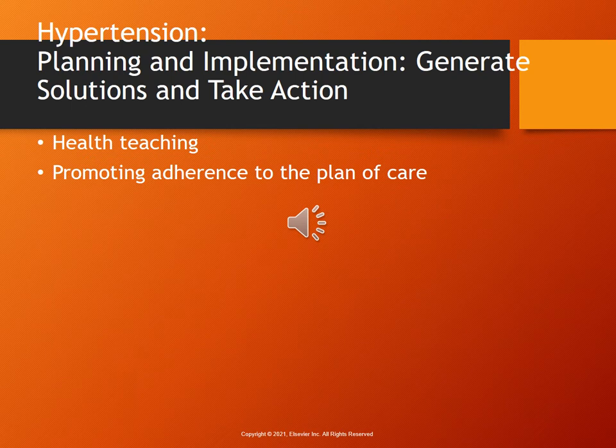Pages 702 to 705 talk about planning and implementation. The client with hypertension is expected to verbalize their individualized plan of care, including lifestyle changes and complementary and integrative health. Pages 703 and 704 cover medical management using drug therapy for hypertension. You have diuretics, beta blockers, calcium channel blockers, angiotensin-converting enzyme inhibitors — otherwise known as ACE inhibitors — and angiotensin 2 receptor blockers, or ARBs. There's a large chart at the top of page 703 in your text.